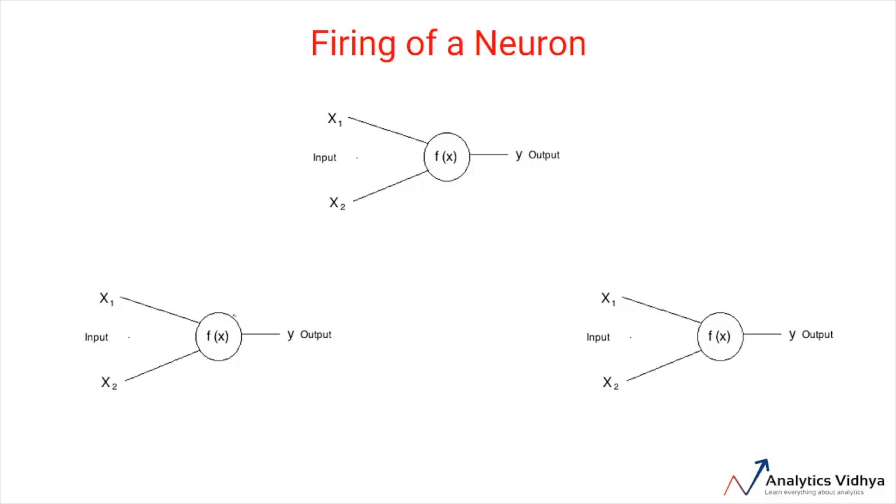For example, if we represent this fx by an addition, then one neuron may fire when the sum is greater than say 100, while the other neuron may fire when the sum is greater than 10. These certain conditions which differ neuron to neuron are called threshold.